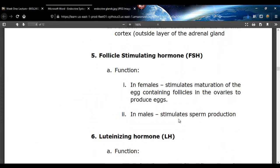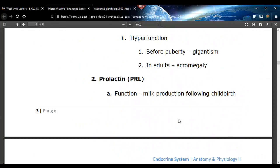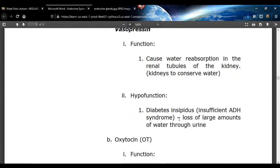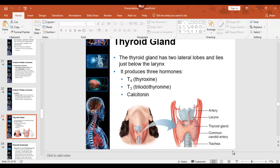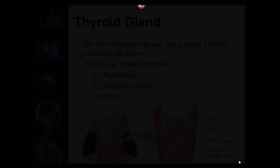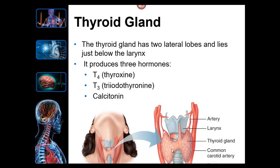Thyroid gland — it's in the middle of the throat, right here. It produces three hormones. If you cut the thyroid in half, you get follicles, and those follicles store T3 and T4 in something called a colloid — a little jelly-like material. The numbers four and three indicate how many iodine atoms are needed to synthesize those hormones.